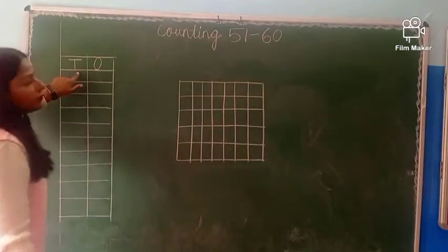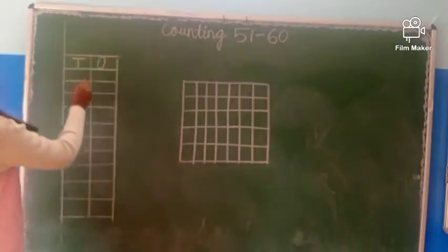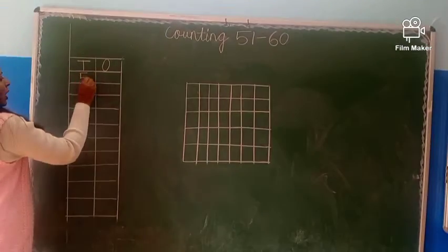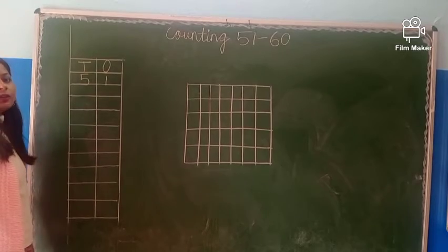So first of all we have to write the place value: 1's, 10's. Then write 5, 1, 51.